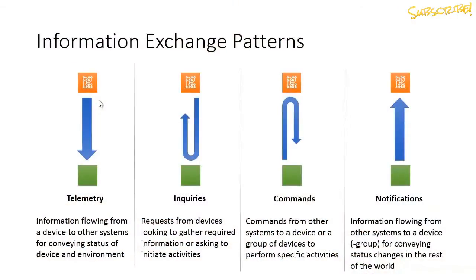There are four patterns which I believe represent a fairly exhaustive set of how to communicate between devices and the cloud. The first one is telemetry — information flowing from a device to other systems for conveying the status of the device and its environment.